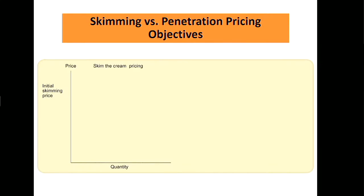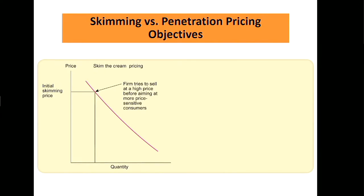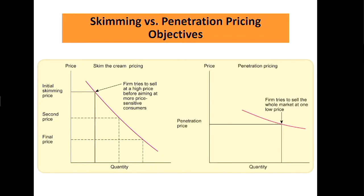There's skimming and penetration pricing. Skimming is where the firm tries to sell at a high price and gets customers at the higher end of the market. Penetration pricing pushes down on price, going higher on quantity. Your costs are kind of set and fixed, and you're using price to set different margins — and that pricing has different effects on quantity.